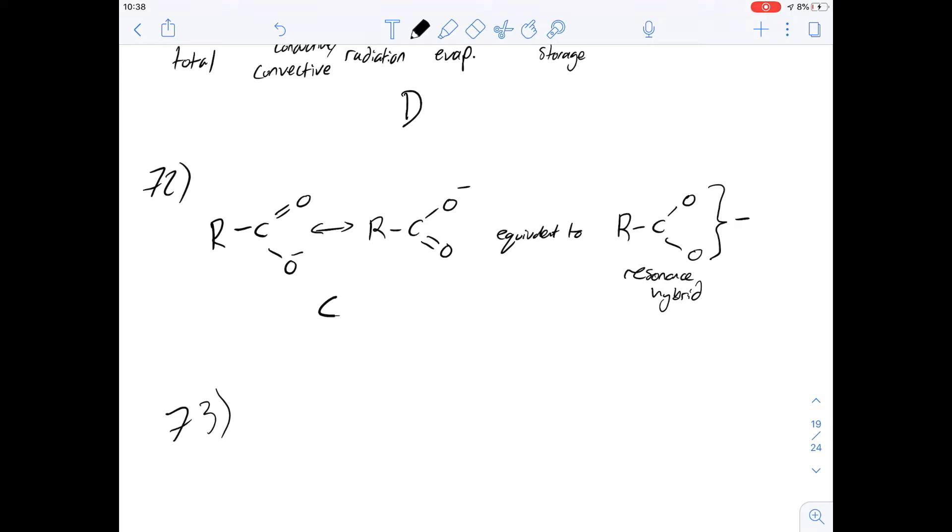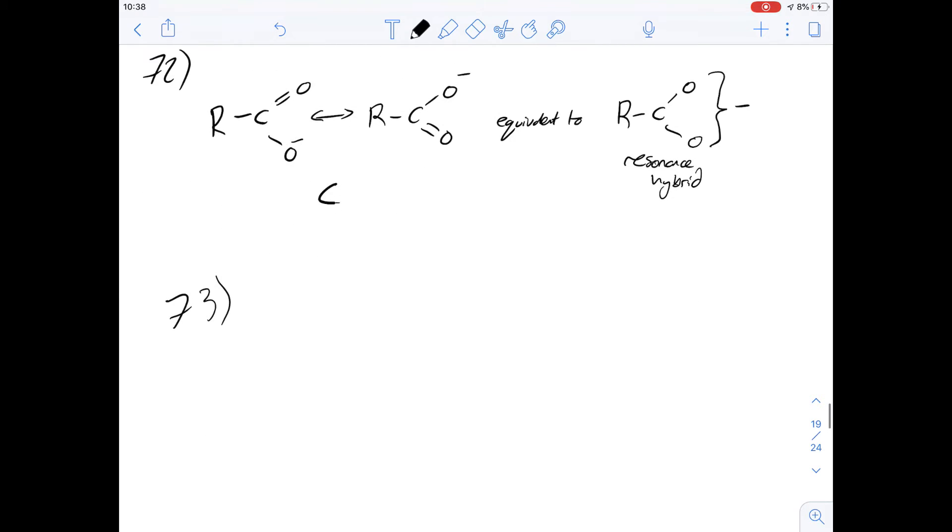Question 73 says: consider the resonance structures 1, 2, and 3 shown below, which one is the major contributor to the real structure? This is where rule 3 is most important. It says the most important resonance structures show each atom with a complete octet and with as little charge separation as possible. If we look at structure 1 and structure 3, we've got positive and negative charge separation on different atoms, whereas structure 2 doesn't have this. Based on that third rule, the answer is B.